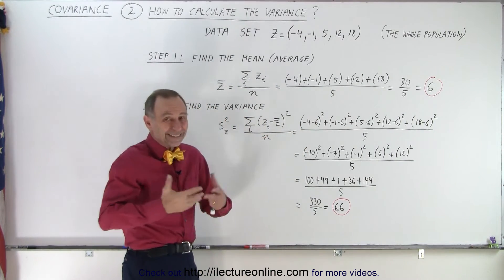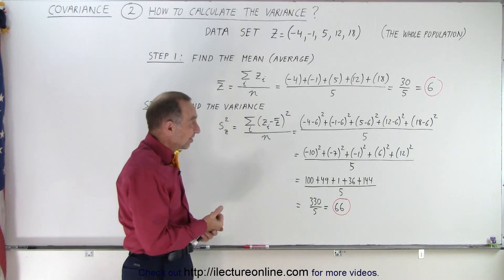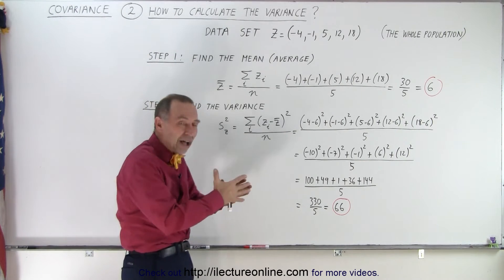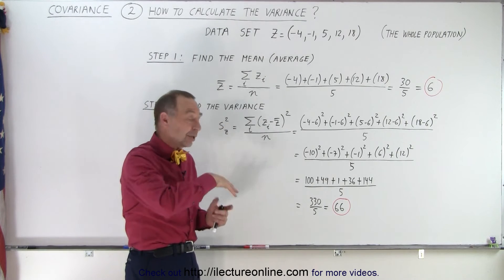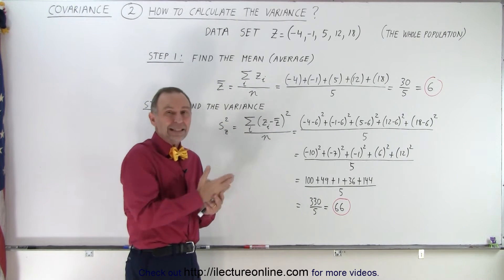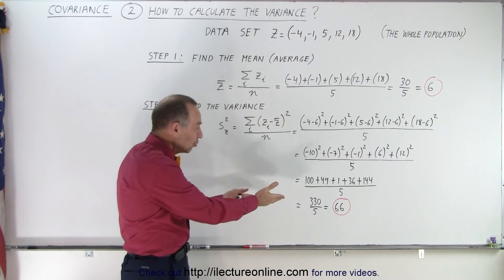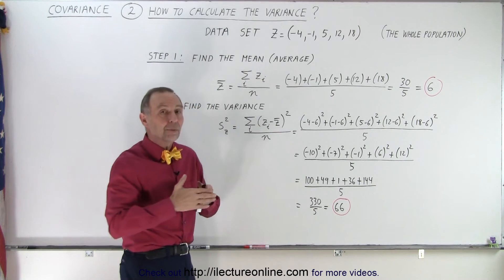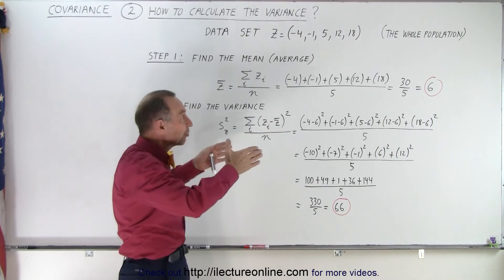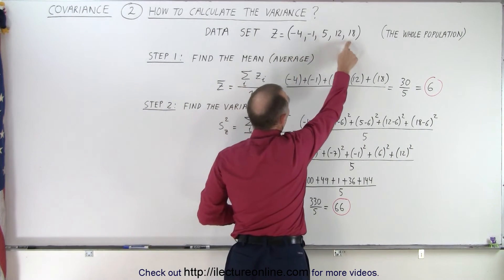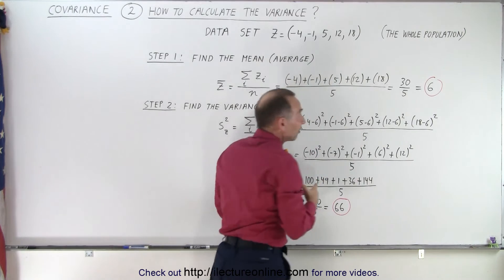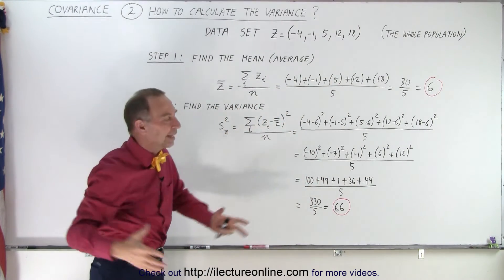And again you might ask, what does that 66 mean? Well, 66 gives you a feel of how spread out the numbers are. We had variances in the previous video that were much smaller—8 and 18.8—so here you can assume that 66 simply represents that the numbers are further spread apart. Notice that the difference between the smallest and the largest number is 22, so it's a greater variation in the data set.